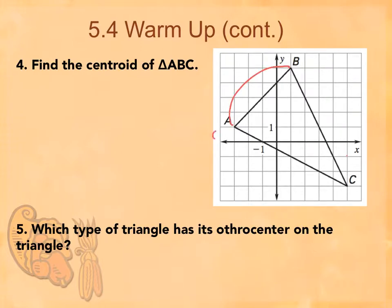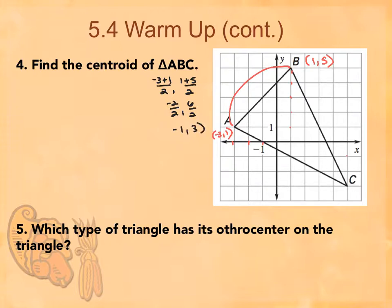So if I were to say that this is negative one, negative two; this is negative three, one; this is one, five. So if I wanted to find the midpoint, I would do negative three plus one over two, and then one plus five over two — giving negative one, three. And that's the midpoint there.